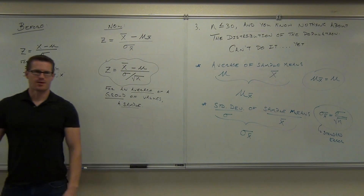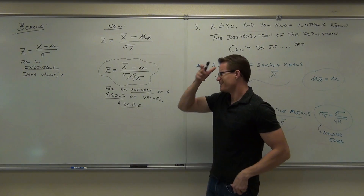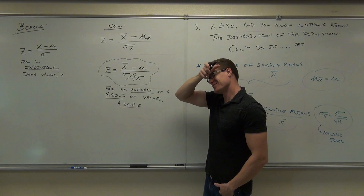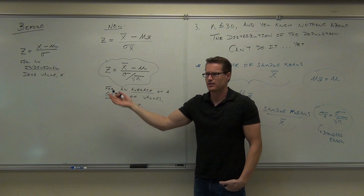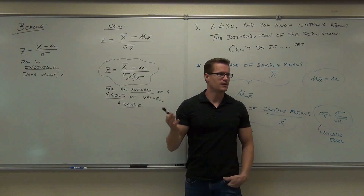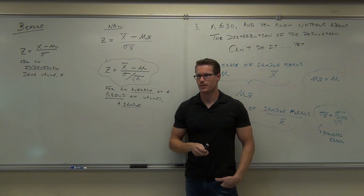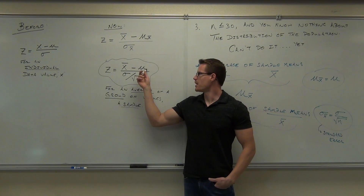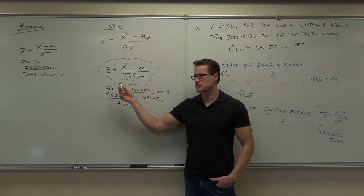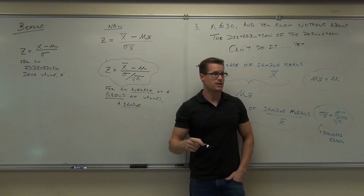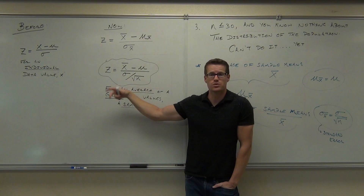A curiosity might arise — you might wonder: I thought the whole idea was to get away from needing the population parameters. Well, we can't. We're going to have to make some assumptions about the population mean and the population standard deviation. We're going to have to assume what the population mean and standard deviation are in order to use this.